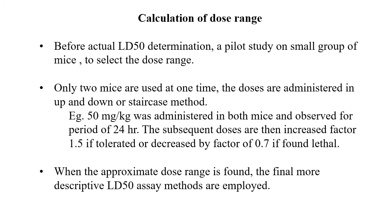Before the actual LD50 determination, a pilot study on a small group of mice is conducted to select the dose range. If the molecule is very new and the range of toxicity is unknown, first two mice are used and given different doses using an up-and-down staircase method. For example, 50 mg/kg of the unknown compound is administered and observed for 24 hours; depending on the observations, the dose is increased or decreased. Once the approximate dose range is found, the final, more descriptive LD50 determination method is applied.